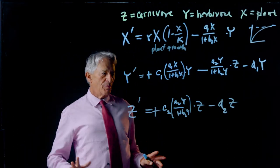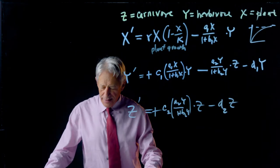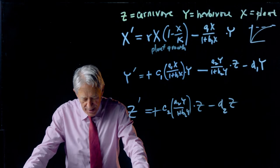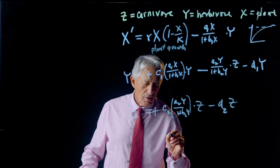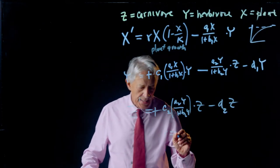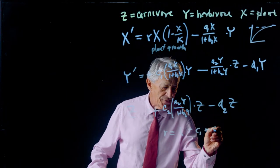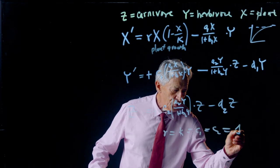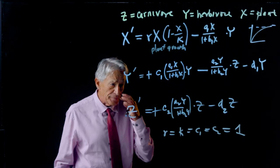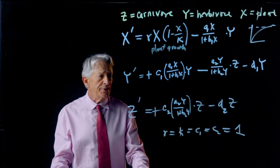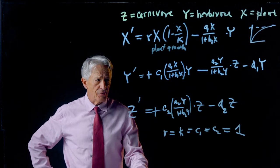So this is the food chain model. There are lots of parameters in it. We're going to set a whole bunch of them equal to 1. We're going to set R and K and C1 and C2 all equal to 1, to get them out of this equation. And we're going to deal with the resulting three variable differential equation.